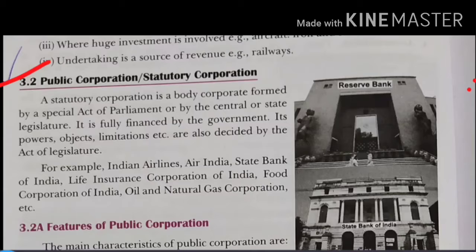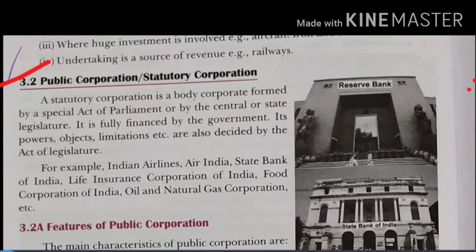Before this, we discussed what the public sector is, what the private sector is, and the difference between both. After discussing that, we saw the types of public sector enterprise. We had the first type — departmental undertaking. Today we are going to discuss what the second type is: public corporation.